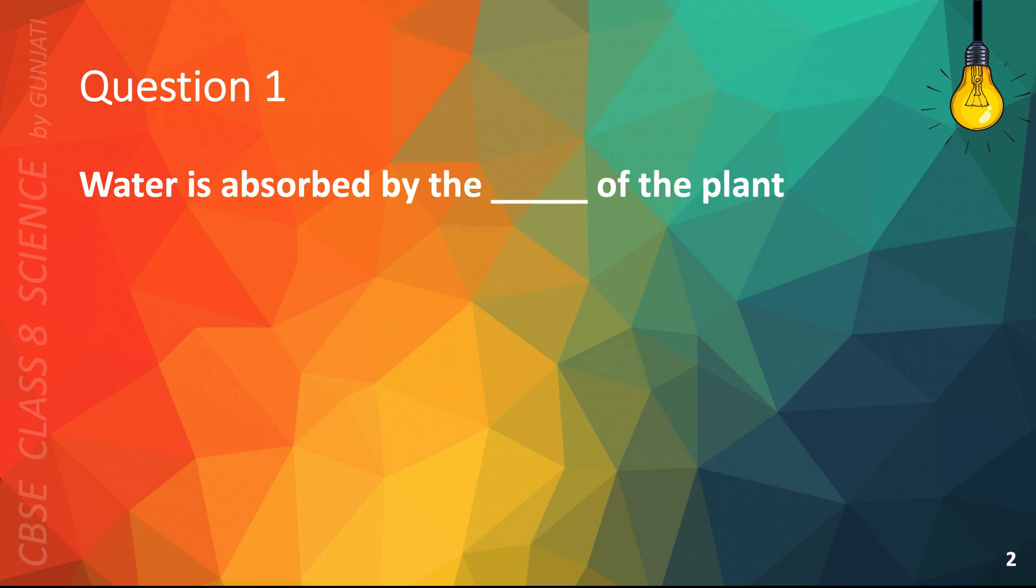Question 1. Water is absorbed by the blank of the plant. A. Roots, B. Leaves, C. Soil, or D. Light. The correct answer is A. Roots.